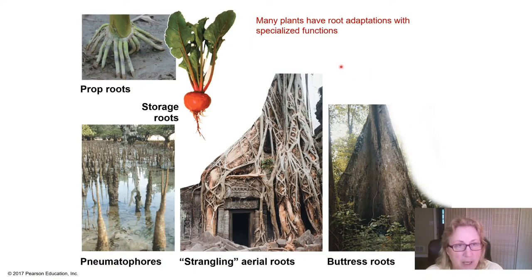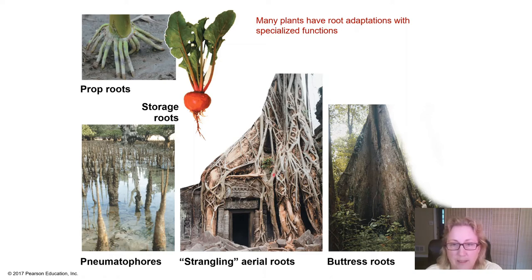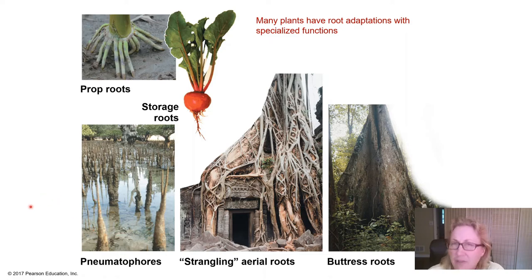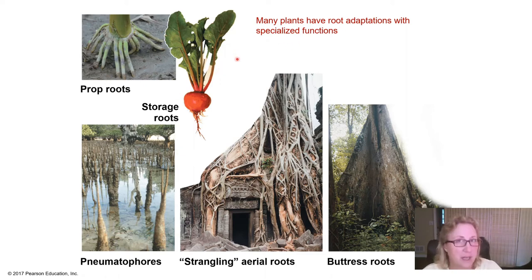Some roots are specialized for lateral support, as seen in many large tropical plants. Some plants have above-ground roots that strangle other plants, like strangler figs. Some plants living in poor, acidic, swampy soils have tree knees, thought to be for gas exchange. And some roots, like potatoes, radishes, and carrots, are especially adapted to store carbohydrates.